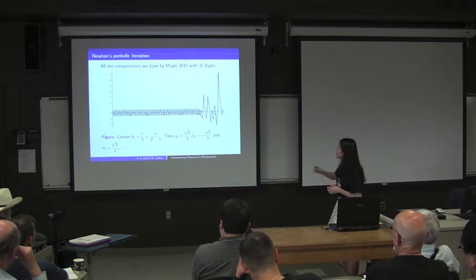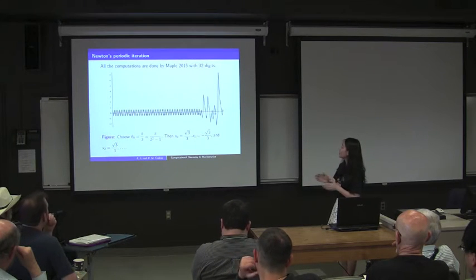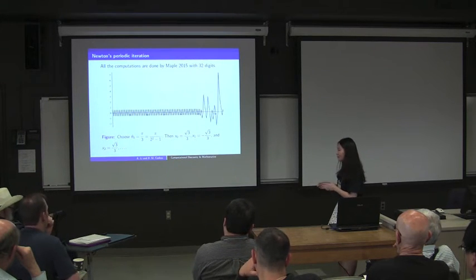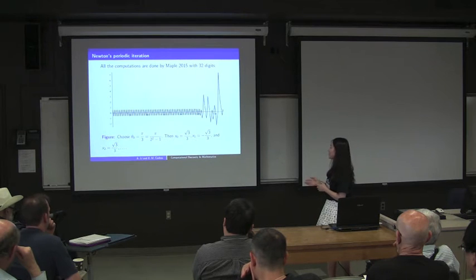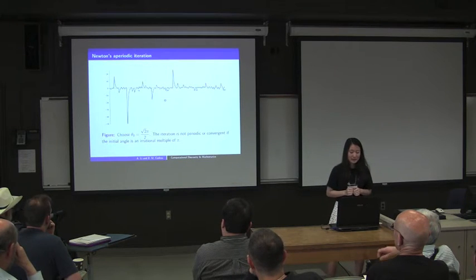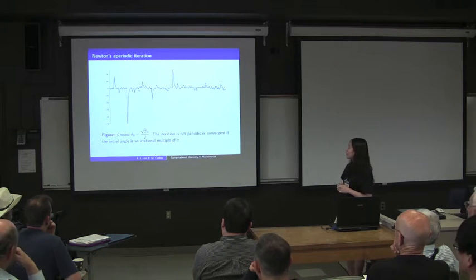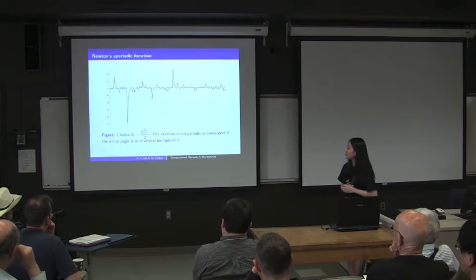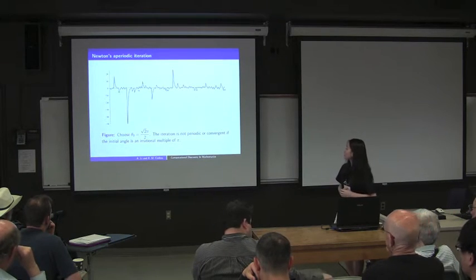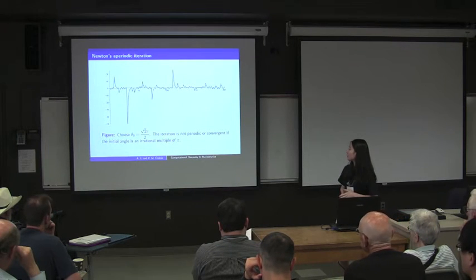However, we can see that after around 100 steps, the periodicity is destroyed by growing round-off error. For the non-periodic iteration example, I chose the initial angle π over 2. From this graph we can see the iteration is neither periodic nor convergent.